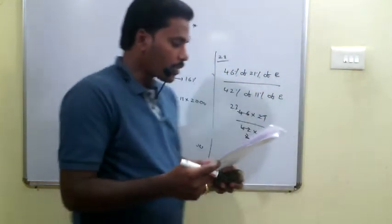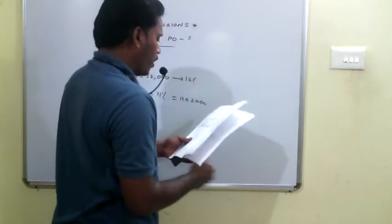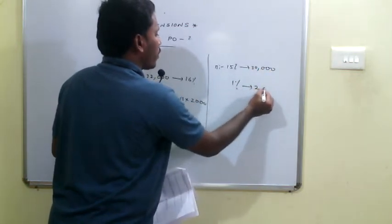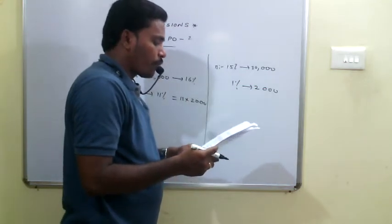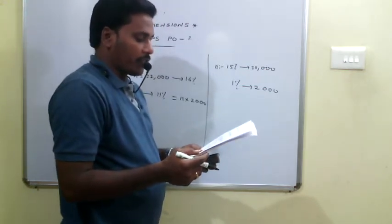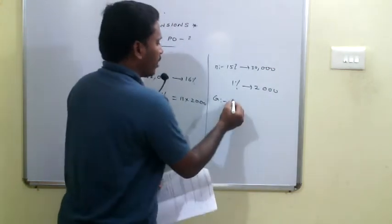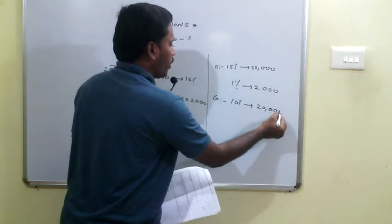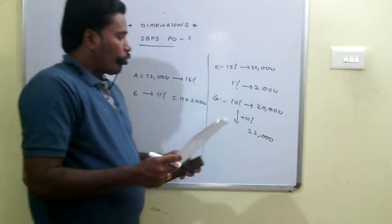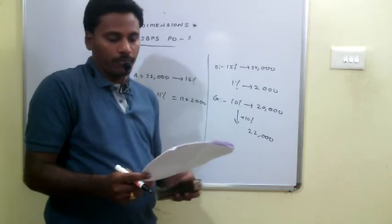Q30: Department B has 30,000 employees (15%), so 1% = 2,000. In the next year, departments B and G each increase by 10%. Department G currently has 10% of employees = 20,000. After 10% increase, G has 22,000 employees. Male employees in G are 58%, so 58% of 22,000 is the answer.